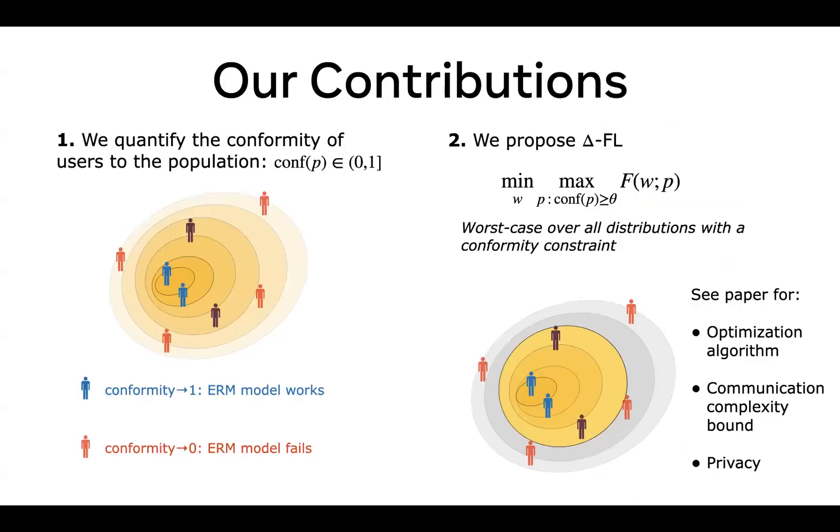Our contributions in this paper are twofold. First, we quantify the conformity of users to the population in a single scalar between 0 and 1. For instance, for those users here in blue, the distribution is pretty close to the average training distribution, so their conformity level is close to 1. And in this case, the ERM model, which minimizes the average error across all the users, works quite well.